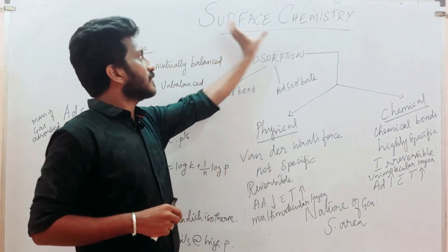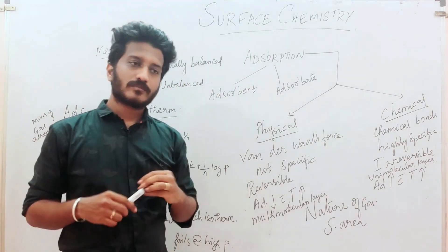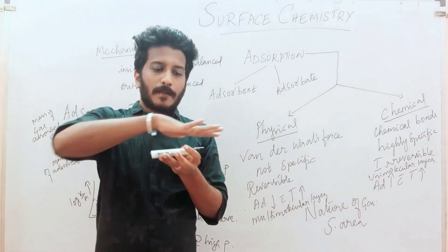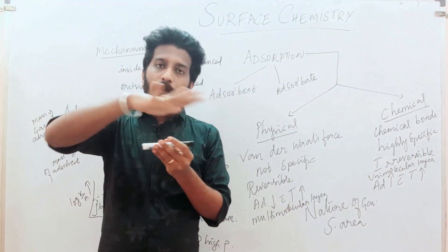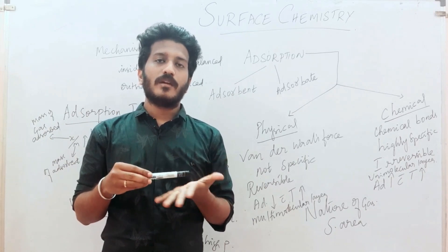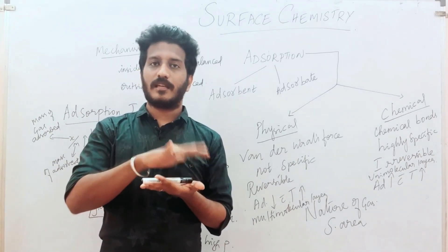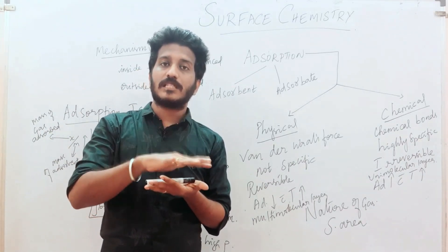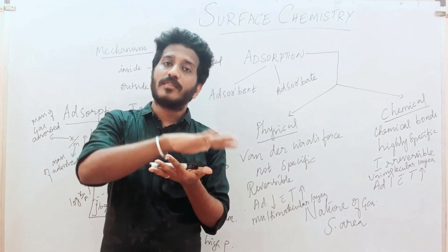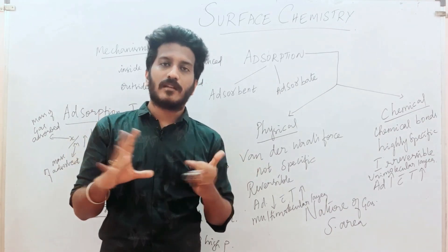The name itself says surface chemistry. Surface means the outermost layer — that is, what changes are occurring on the surface of a material. That is what we study in surface chemistry.